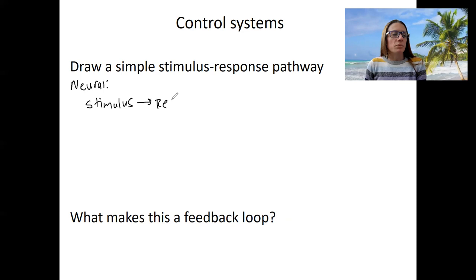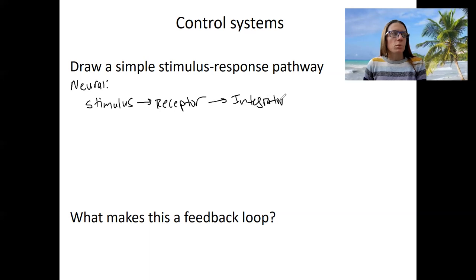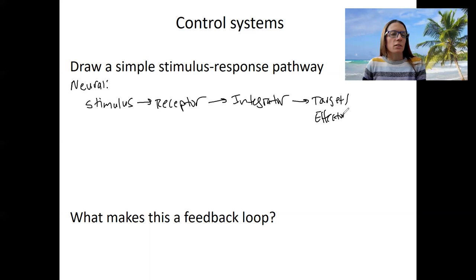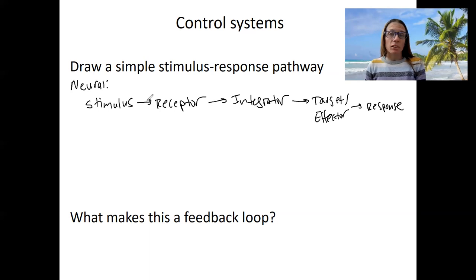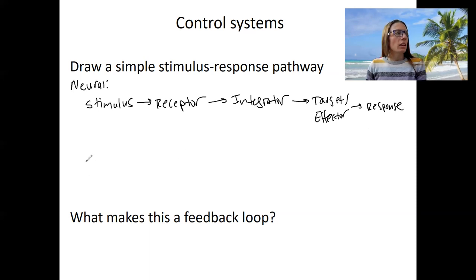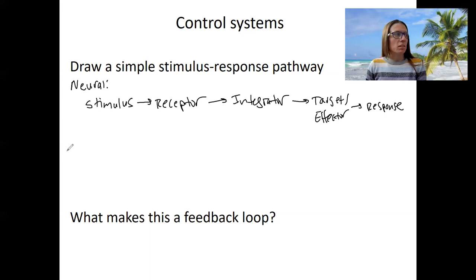There should be no surprise here in what I'm about to draw. We have these components: stimulus, receptor, integrator, effector, response. For example, a tap on the patellar tendon causing a kick of the leg. Now this is a stimulus-response pathway — this is not a feedback loop. I'll talk about that in a moment.